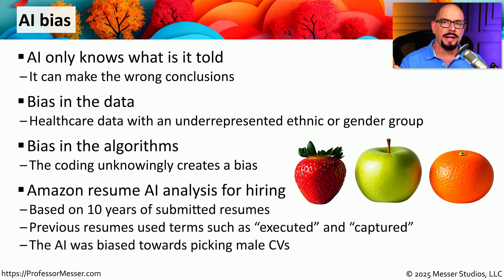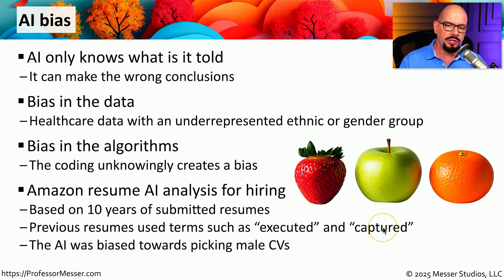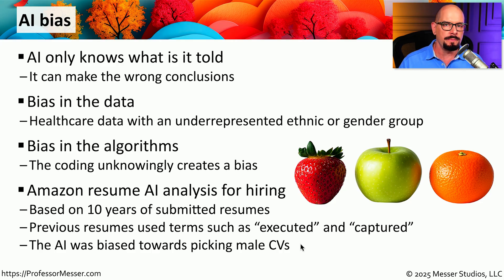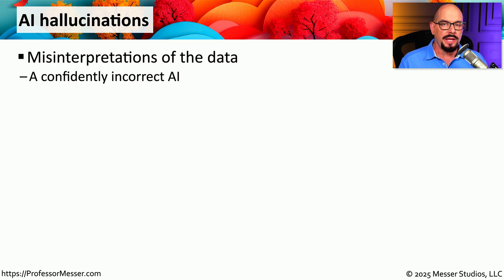A good example of this is what Amazon found when they took 10 years of submitted resumes and put them into an AI engine. This grouping of resumes had a number of terms such as "executed" and "captured" as part of the resume text, and the AI tended to pick resumes that had those terms. What they found is that those terms were more often used when a male was submitting a resume versus a female, and therefore the AI created a bias towards male resumes. Obviously, Amazon chose not to use this AI algorithm for their resume research.